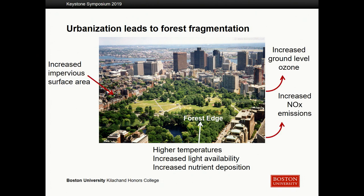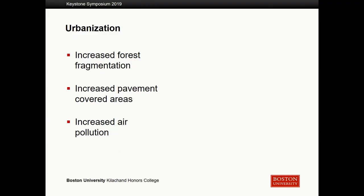Additional factors that can result from urbanization include an increase in impervious surface area — essentially pavement-covered areas — as well as increases in air pollutants, including ground-level ozone and NOx emissions. Both of these air pollutants come from human activities like driving cars and other industrial activities. I'm very interested in figuring out how these factors — increased forest fragmentation, increased pavement-covered areas, and increased air pollution — impact nitrogen cycling, specifically net soil mineralization.